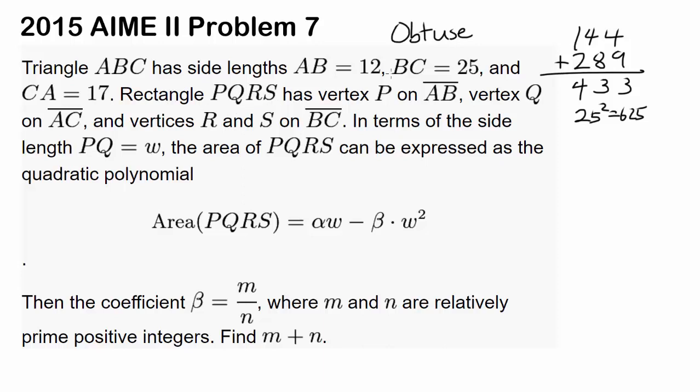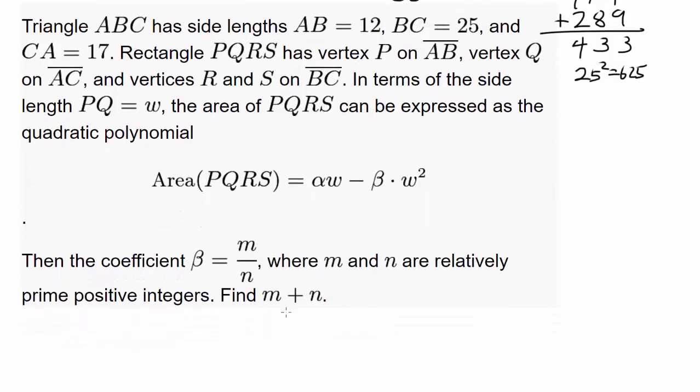Rectangle PQRS has vertex P on AB, Q on AC and vertices R and S on BC. I'm going to have to visualize that. In terms of the side length PQ equaling W, the area of PQRS can be expressed as the quadratic polynomial alpha W minus beta times W squared. Then the coefficient beta is M over N and we wish to find M plus N. So let's get right to it.